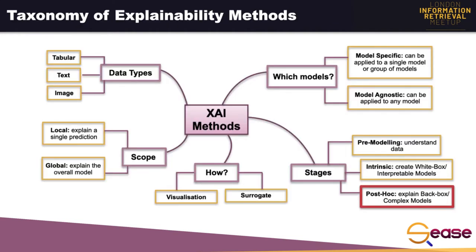Now there are multiple approaches and methods. I want to give you an idea of how to categorize them with a useful explainability taxonomy. One crucial factor that should be taken into consideration is the type of data input — the data you are working with to train your model. In fact, explainability is going to look a bit different for tabular, text, and image data. For tabular data, explainability gives attribution values for each feature in our model to show how they influence the prediction.